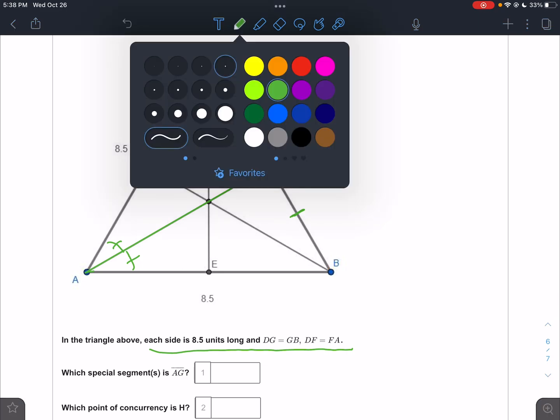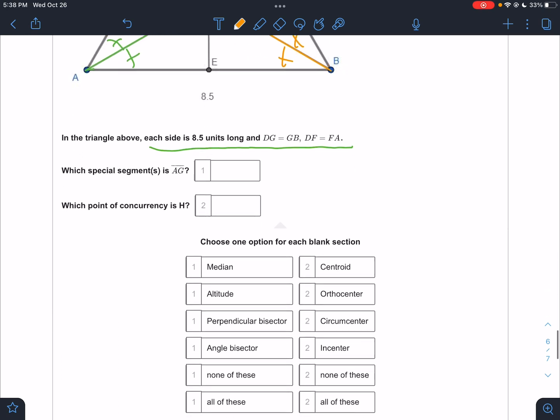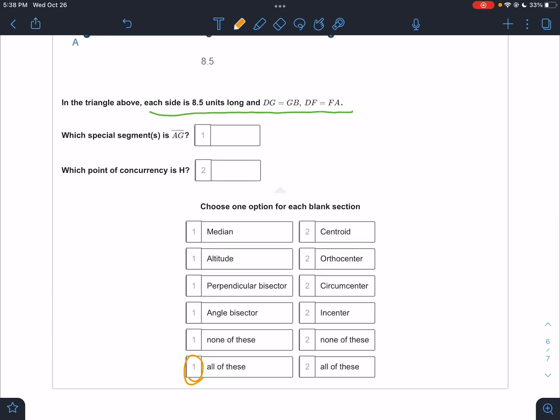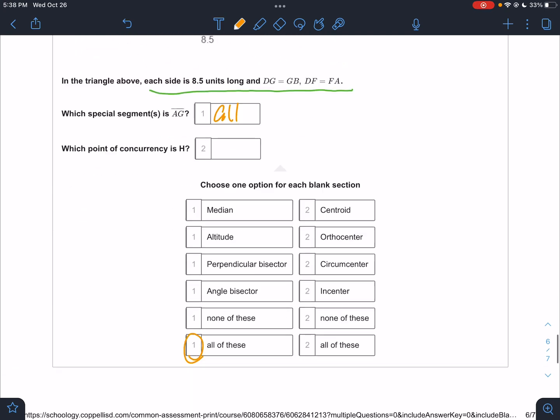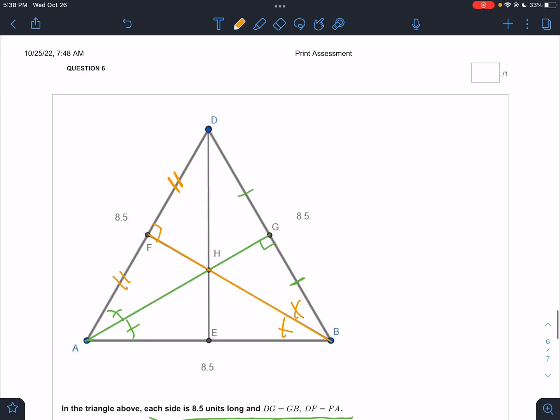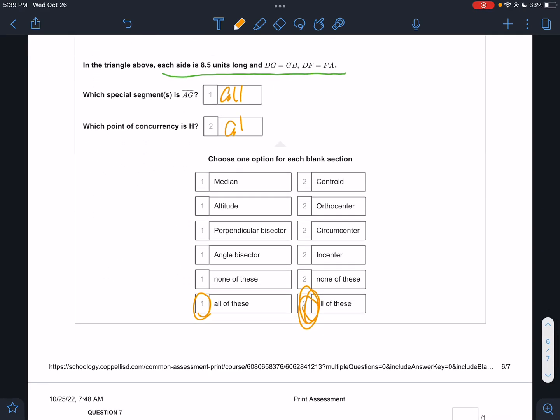Then they tell us that DF, where is DF over here, is equal to FA. Also a median. But because it's equilateral, it's everything. It's all the things. What special segment is AG? All. It's all four. What point of concurrency is H? All. Well, medians meet at a centroid, but when it's equilateral, all the points line up at that one spot. It's all of those. So it's all and all.